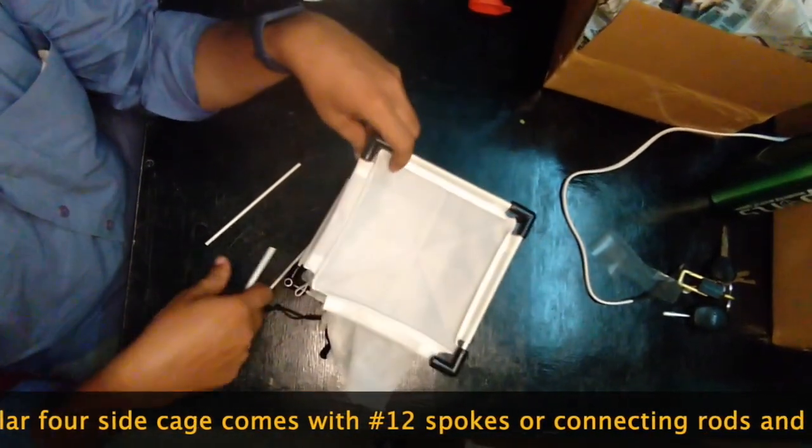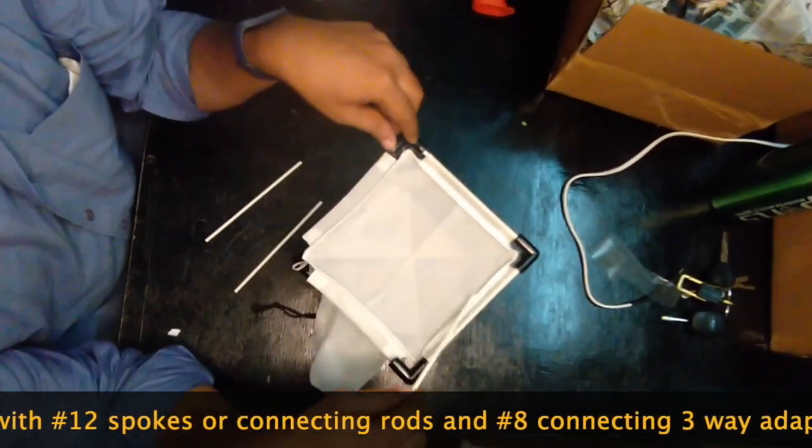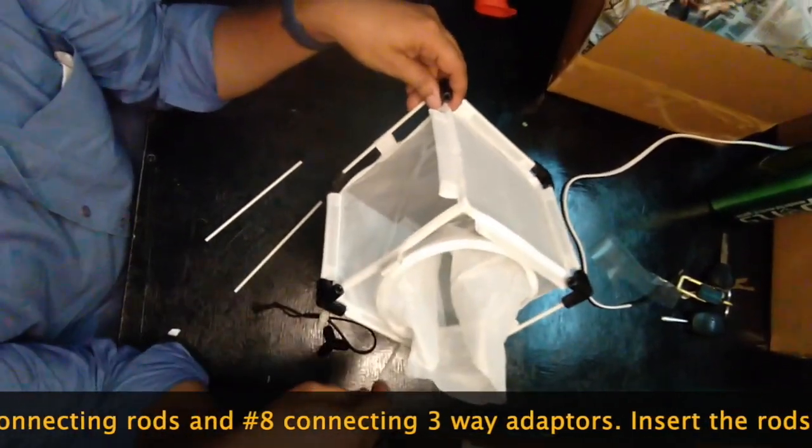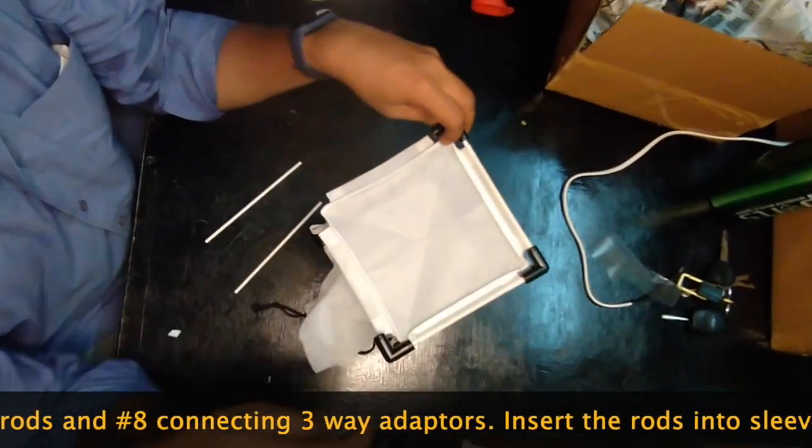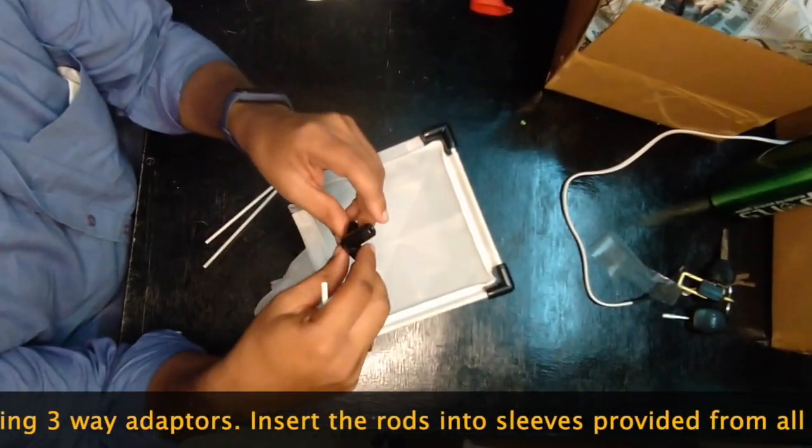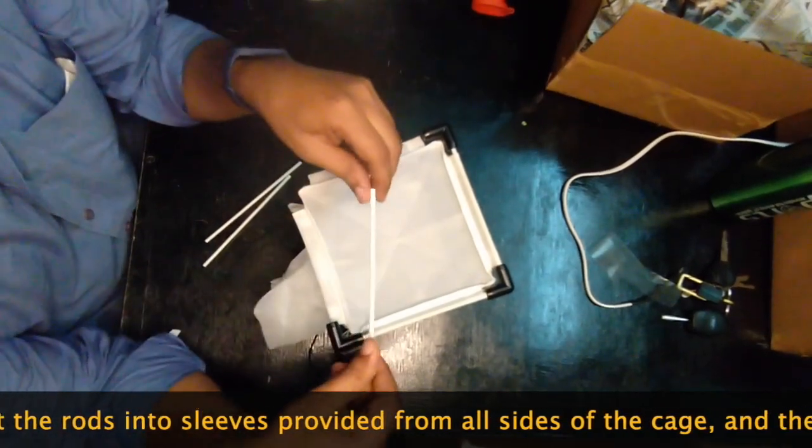You will receive 12 spokes. These are the FRP rods: one, two, three, four, and then four, and then four. Four times three equals twelve. So the cage has black adapters and then 12 FRP spokes.